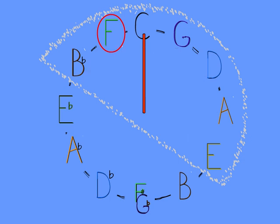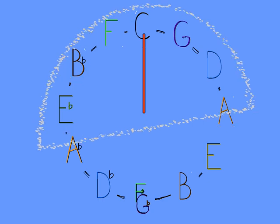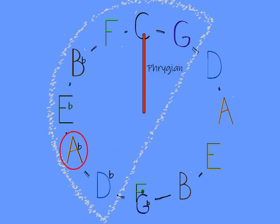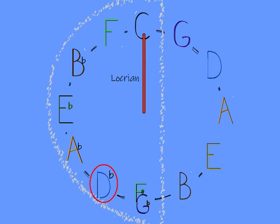If we want C to be in Dorian mode, we shift the grouping again. Another shift puts C in Aeolian mode, another shift puts it in Phrygian mode, and the last shift puts it in Locrian mode.